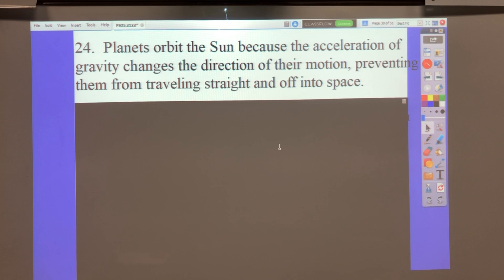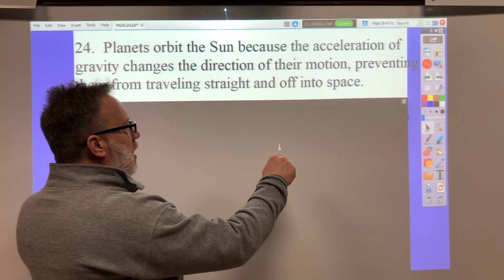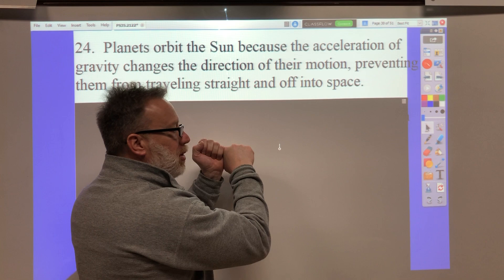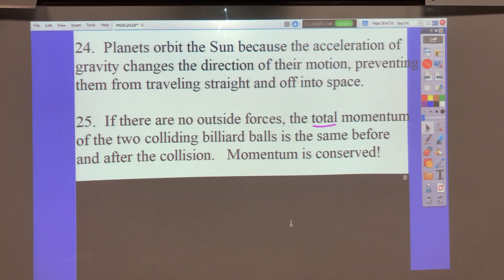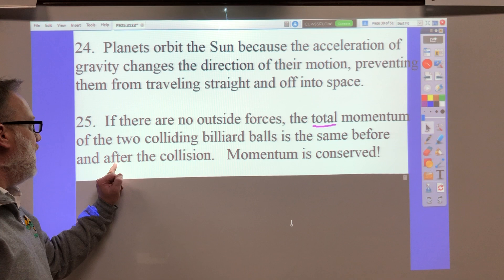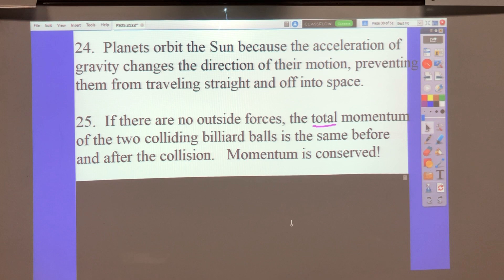Number 25. Describes what happens to the momentum of two billiard balls that collide. The momentum before and the momentum after is the same. One billiard ball will speed up, and the other one will slow down. One will pick up momentum, one will lose momentum, but the total momentum is the same before and after. So if there are no outside forces, the total momentum of the two colliding billiard balls is the same before and after. Momentum is conserved.